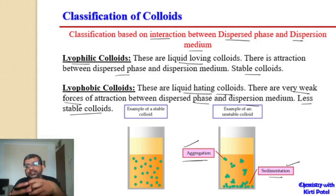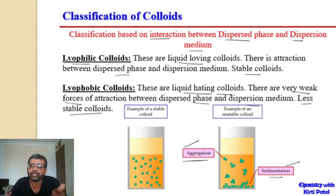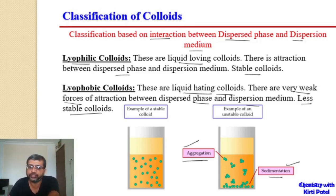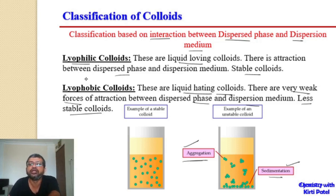In aggregation, the particle size increases and with greater size the mass also increases, causing the particles to settle down — behaving like a suspended solution rather than a colloidal solution. So colloids are classified in two ways: eight classes based on physical states of dispersed phase and dispersion medium, and two types — lyophilic and lyophobic — based on the interaction between dispersed phase and dispersion medium.